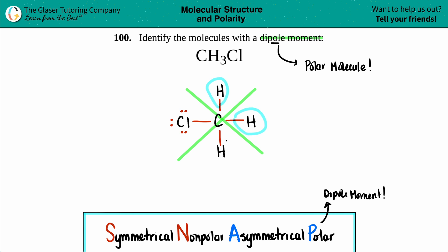I got a hydrogen, I got a hydrogen, I got a hydrogen, but then I got a chlorine. That is not symmetrical. This is totally asymmetrical.